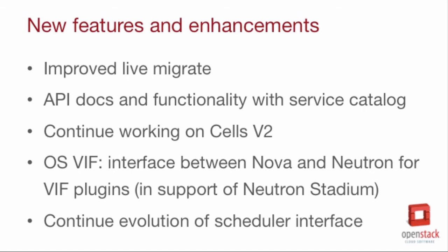There are quite a few things carried over from the last release — multi-cycle efforts that are just taking time. One is the API work: we're going to focus on API documentation and making sure the API works well for the service catalog. There's also the Cells V2 work, which is going to be a focus for this cycle. Another priority is OSVIFlib — basically making sure we have a solid interface between Nova and Neutron for VIF plugging, which is really important to support Neutron's big stadium of projects and keep velocity on the VIF plugins. And finally, we're going to keep working on the scheduler and getting that interface solid. So: live migrate, the API, cells, OSVIFlib, and the scheduler.